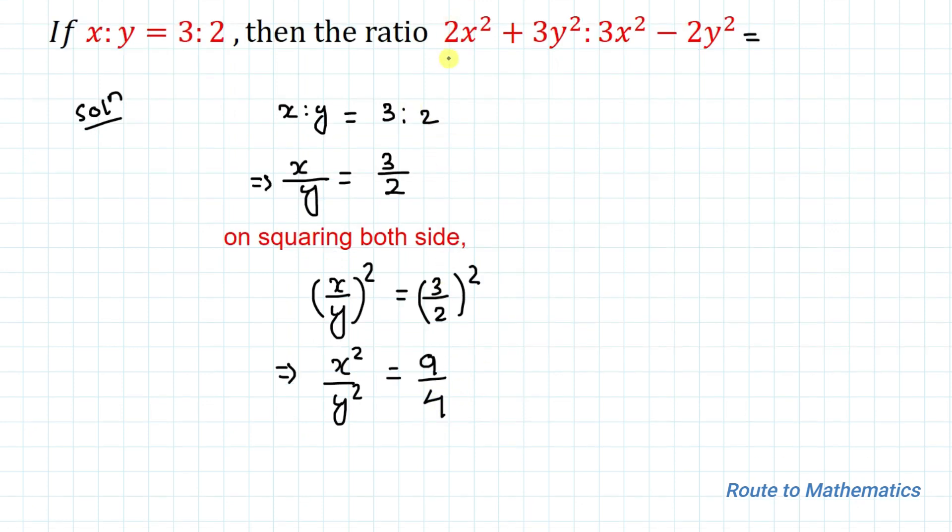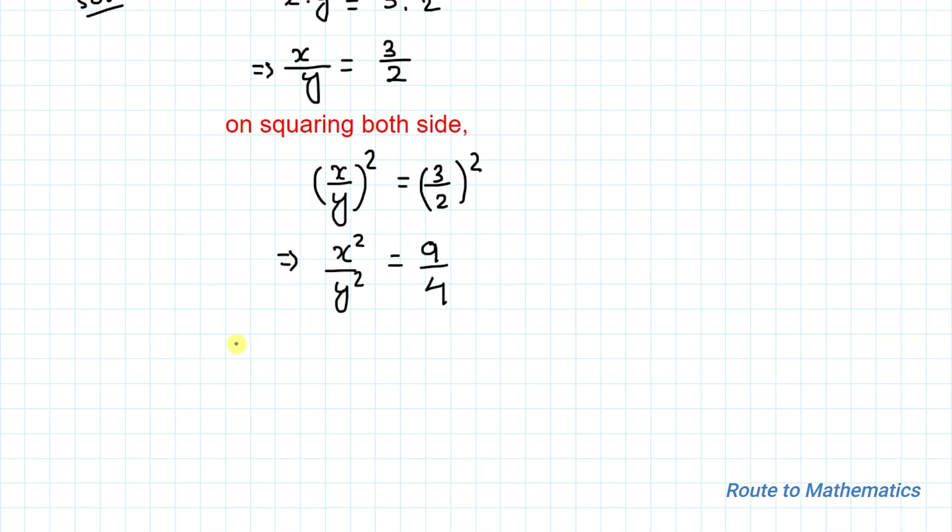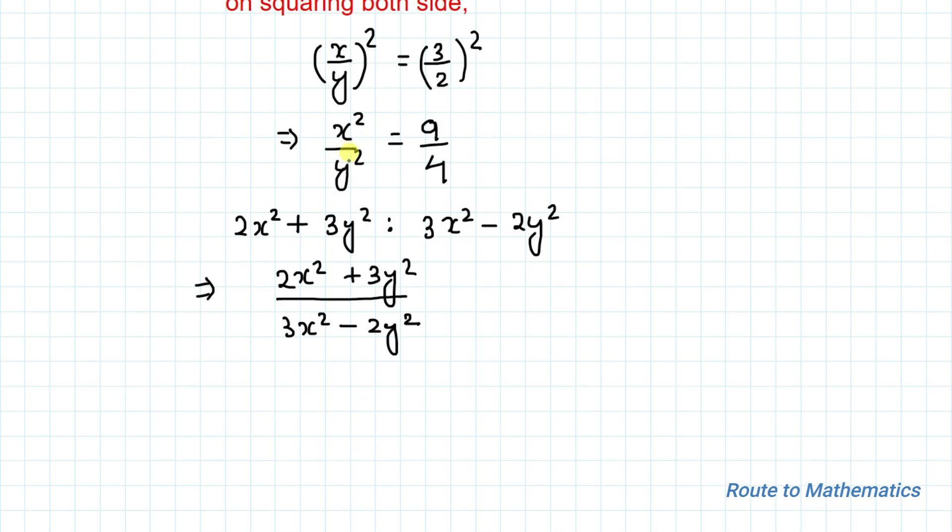Now we will come to the expression need to be found. So our expression is 2x square plus 3y square is to 3x square minus 2y square. We can write this as 2x square plus 3y square divided by 3x square minus 2y square. As we already have the value of x square by y square, we will divide y square in both the numerator and denominator of this expression.